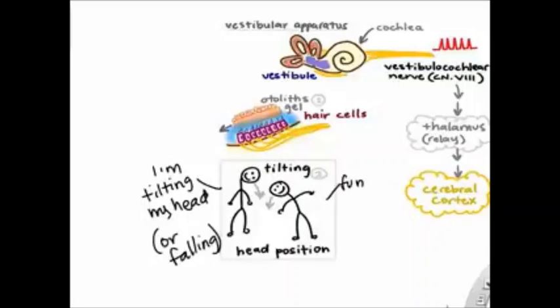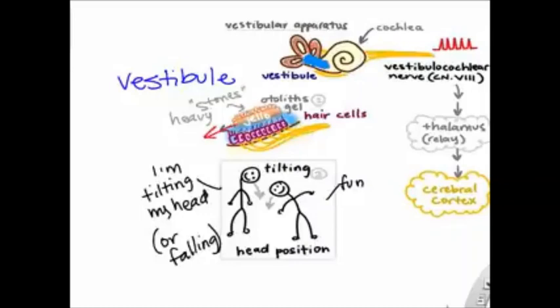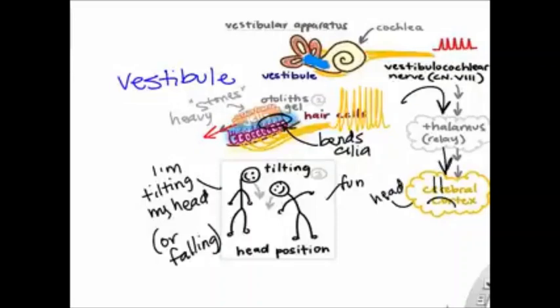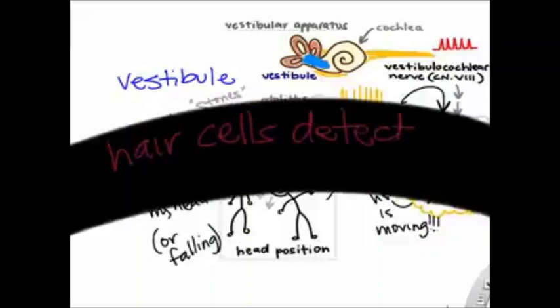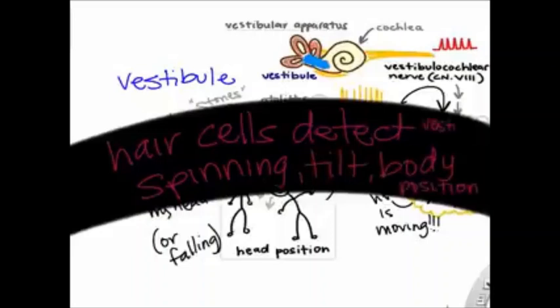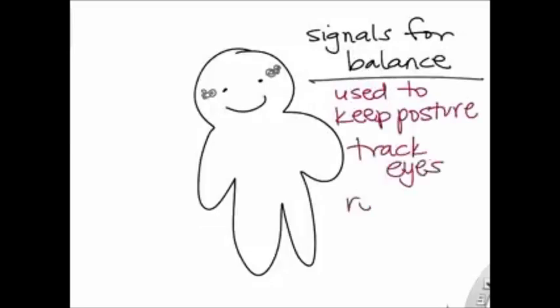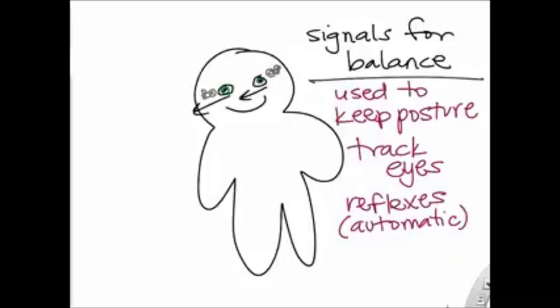For detecting head tilt or falling, we use the vestibule. Hair cells there have a jelly-like substance on top containing tiny stones called otoliths, making it heavy. When you tilt your head, the jelly shifts and bends the hair cells, generating action potentials interpreted as head position — important for balance. Problems with this part of the inner ear can cause vertigo: feeling like you're spinning or falling even when you're not. These signals maintain posture, enable eye tracking during movement, and regulate autonomic reflexes.